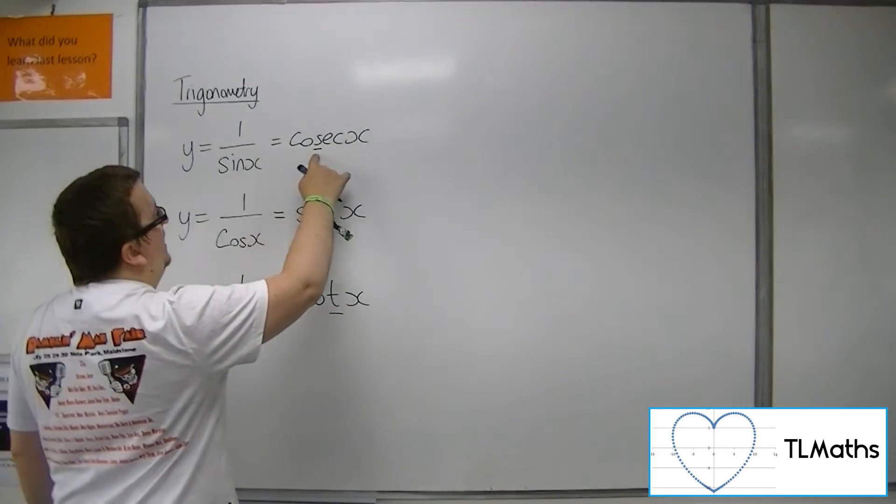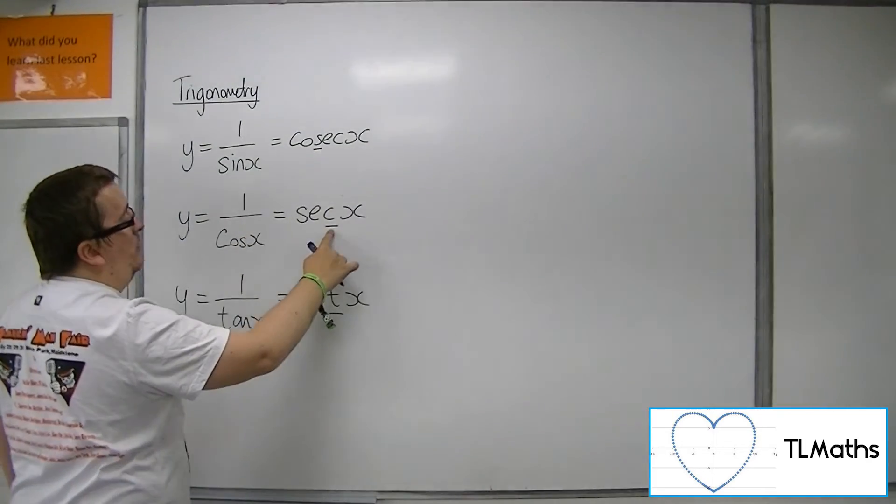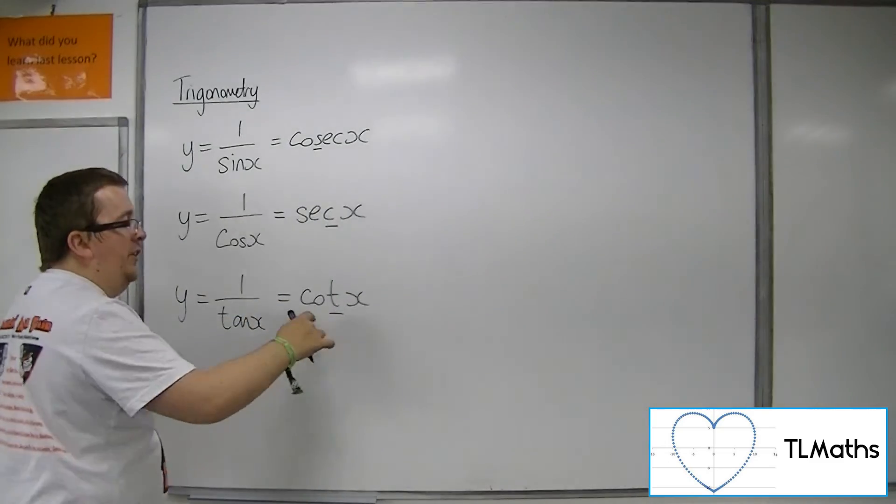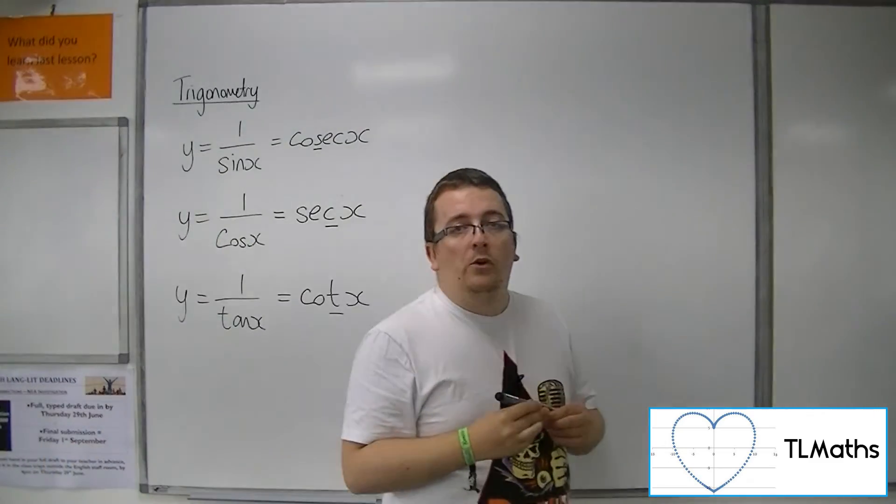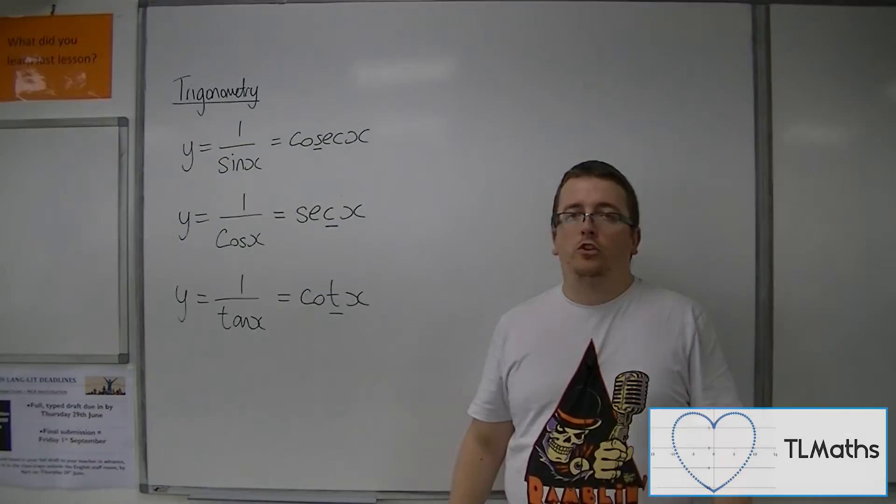So cosec is one over sin, sec is one over cos, cot is one over tan. So that should allow you to never forget which is which.